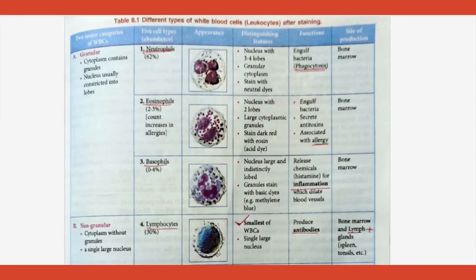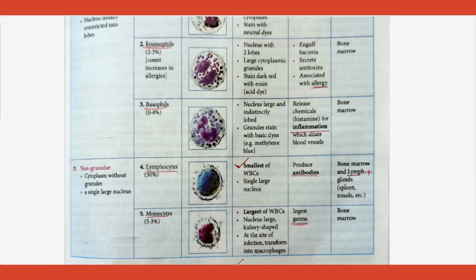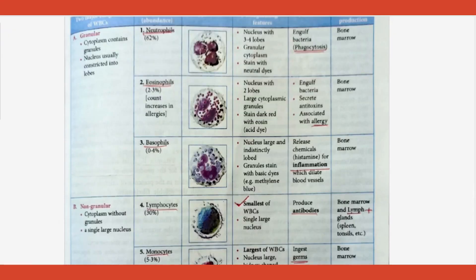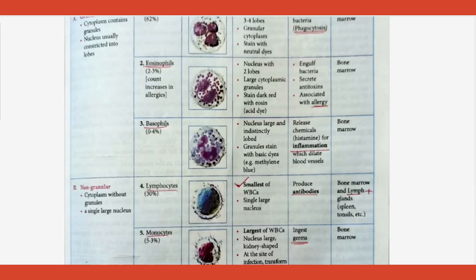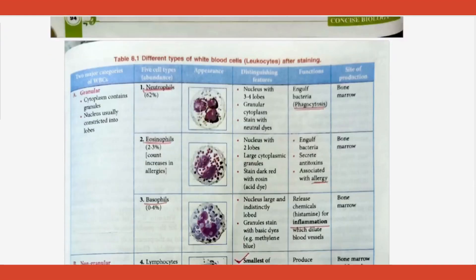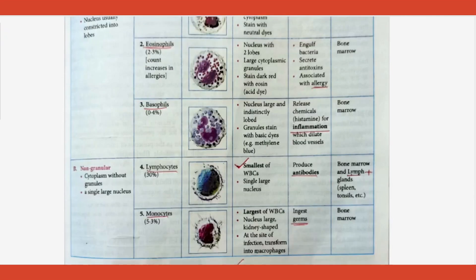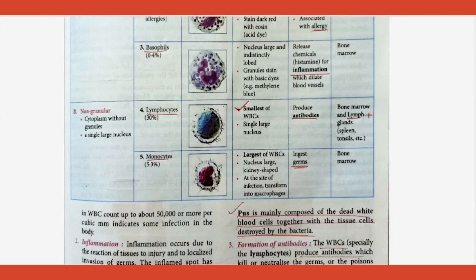From the WBC table: WBCs are categorized into granular and non-granular (agranular). The three types of granular WBCs are neutrophils, eosinophils, and basophils. Non-granular are lymphocytes and monocytes. Each has a specific function: neutrophils — phagocytosis; eosinophils — allergy response. All are produced in bone marrow; lymphocytes are also produced in lymph glands like spleen and tonsils.